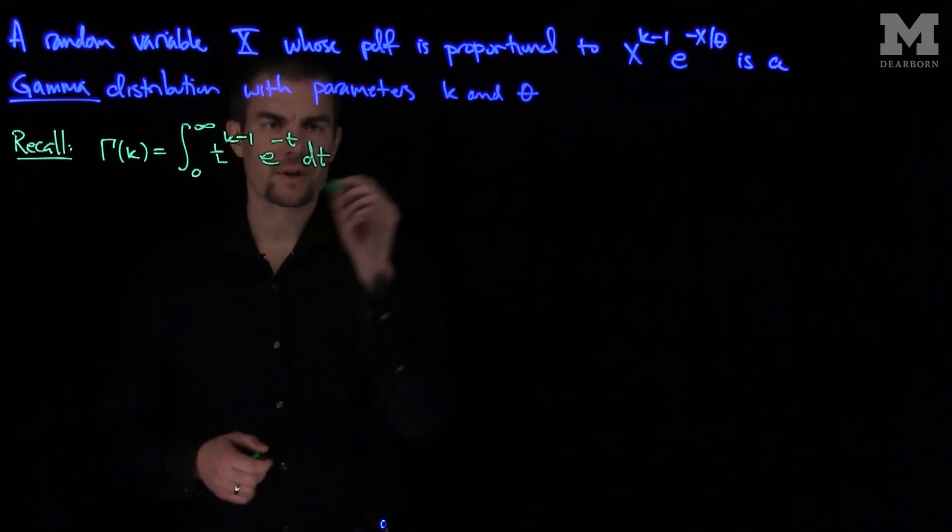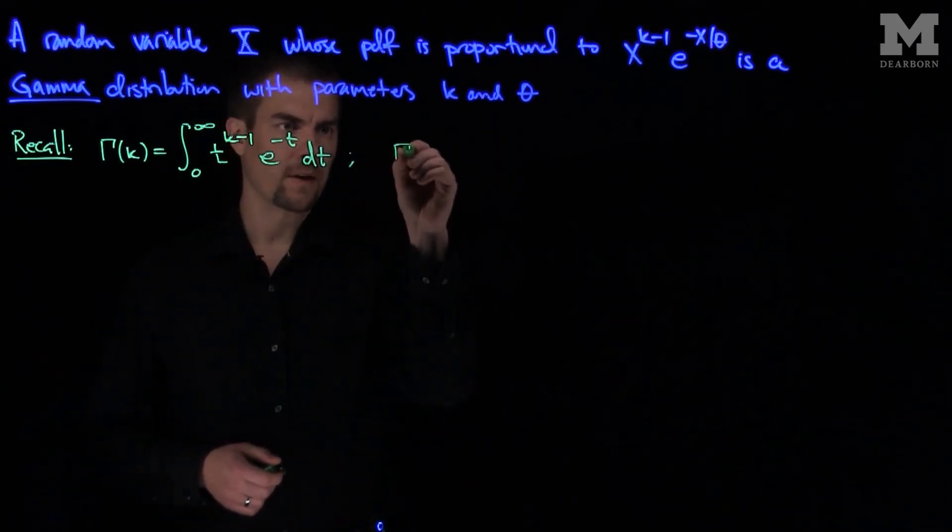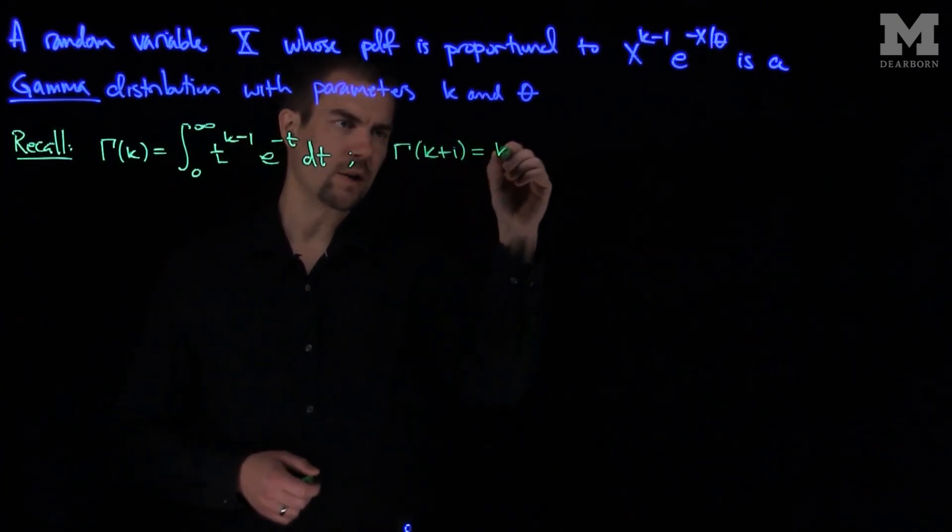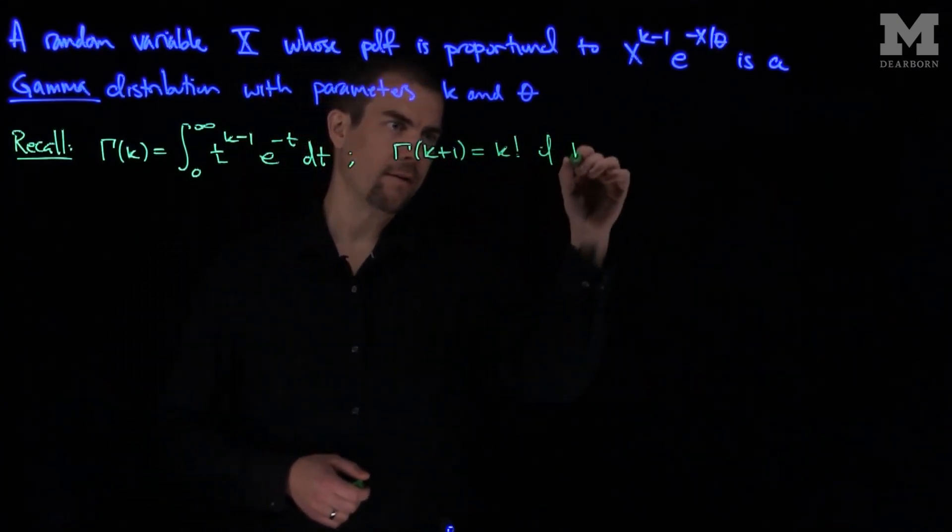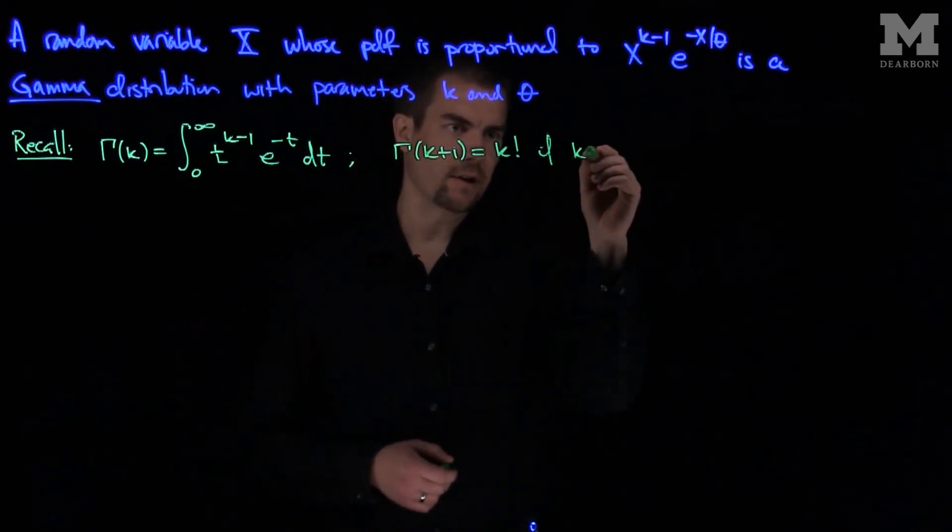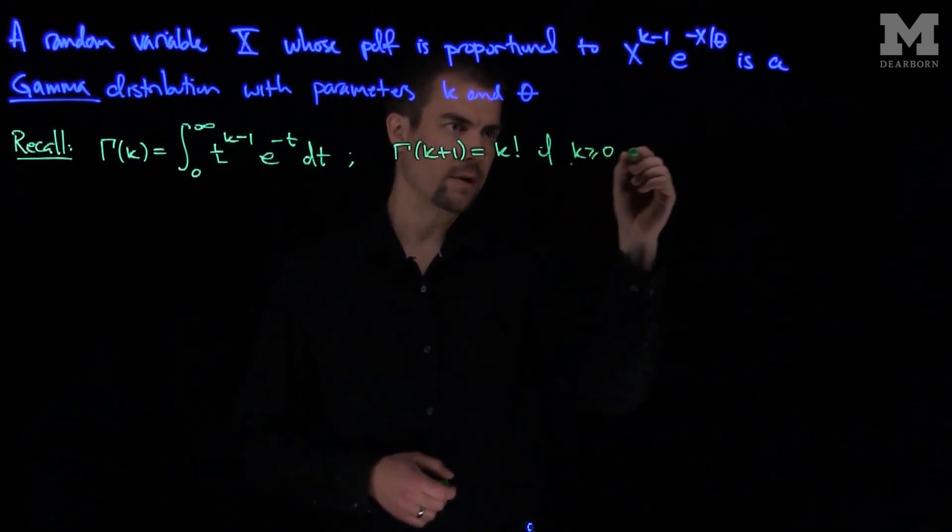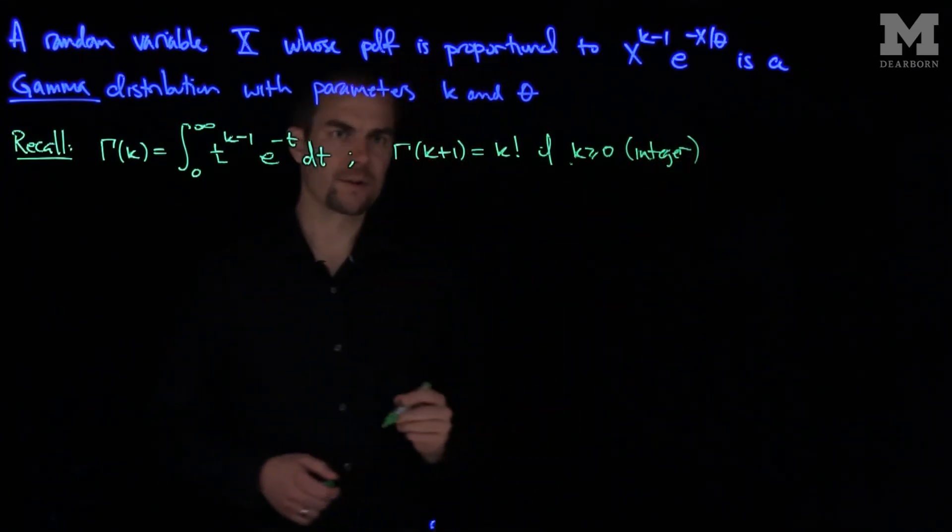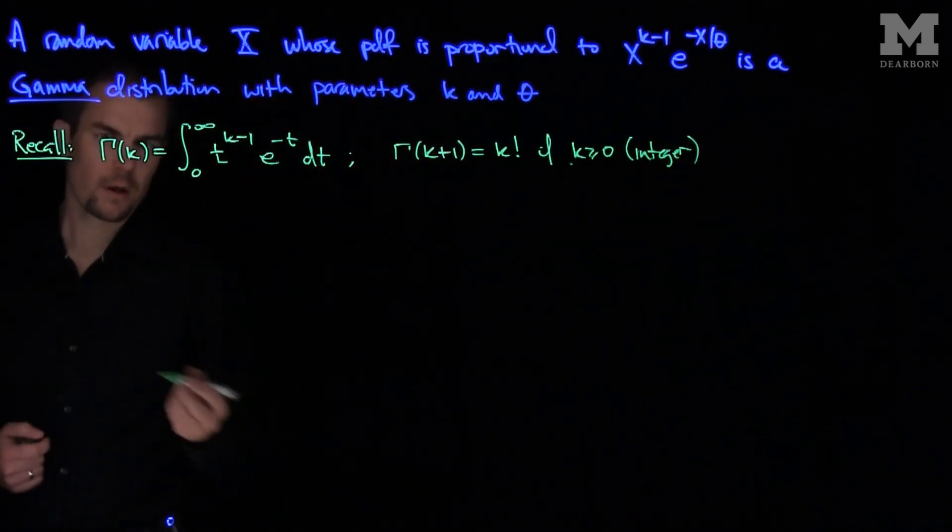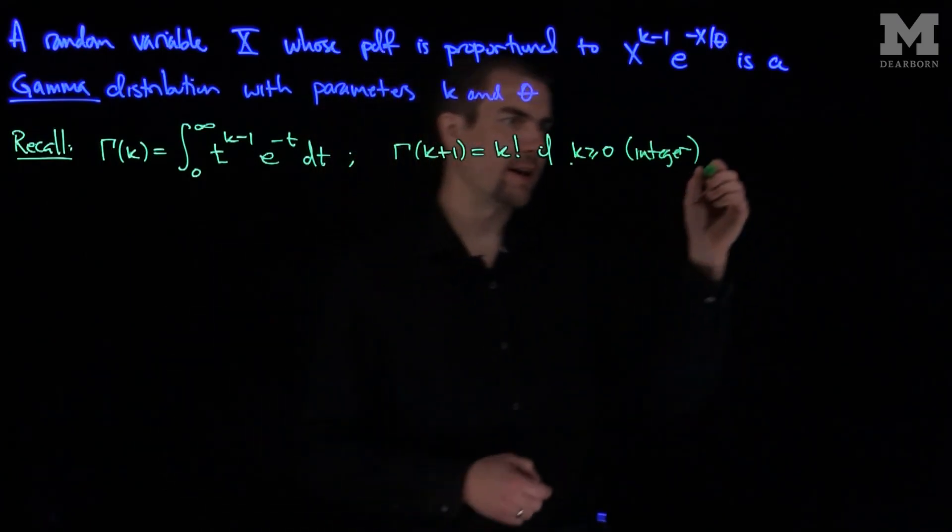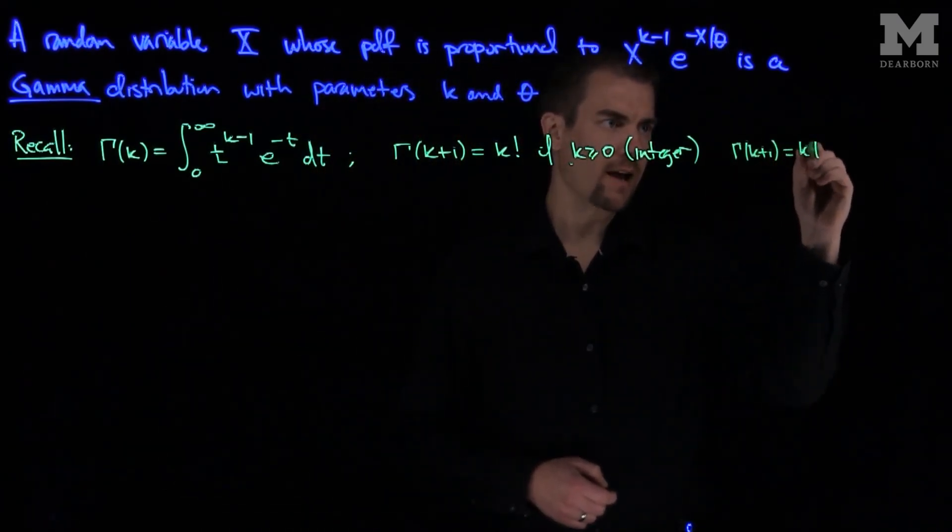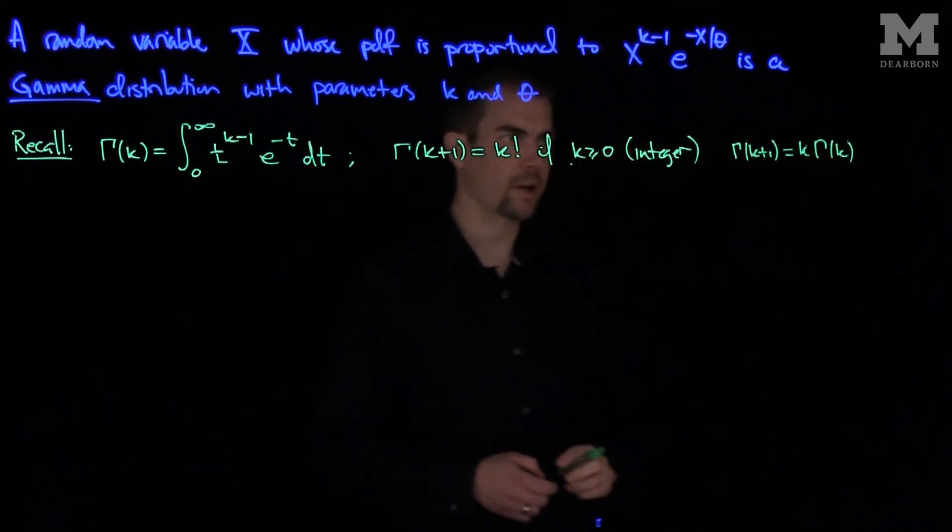And it turns out that there's a whole bunch of nice properties of gamma. We'll just summarize a few of them. Gamma of k plus 1 is equal to k factorial if k is a non-negative integer. So it's a generalization of the factorial function. And the second most important property is that gamma of k plus 1 is k gamma of k. So it has this replication identity.